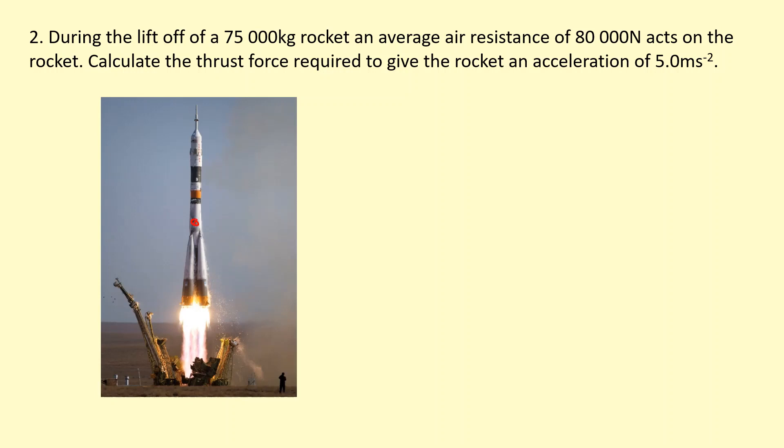So we know the thrust is going to be the biggest force here because we know it's accelerating. We're going to call that x. Then we've got the weight of the rocket itself, we can't forget that, so mg, and then we've got air resistance which is going to be acting the opposite direction to motion, so that's going to be downwards as well, which is 80,000 newtons.